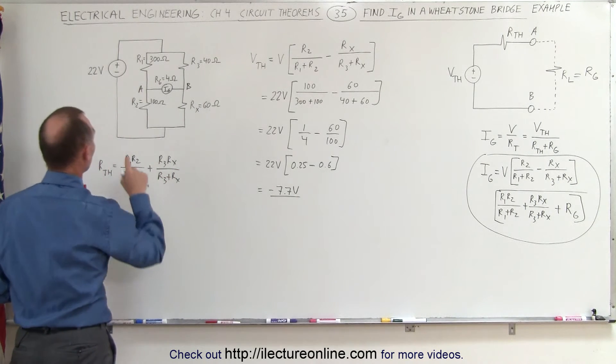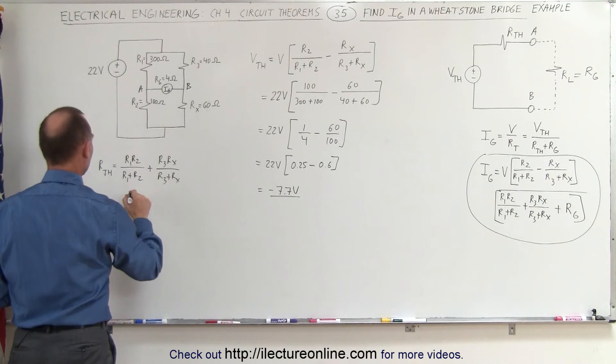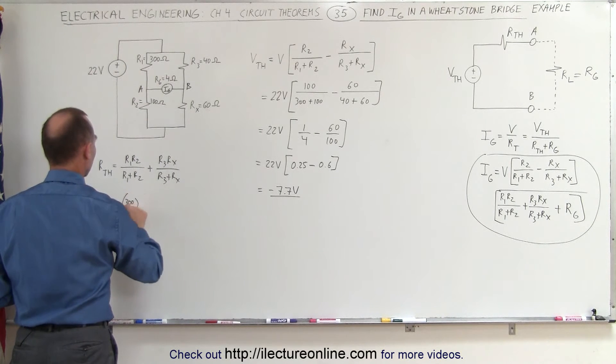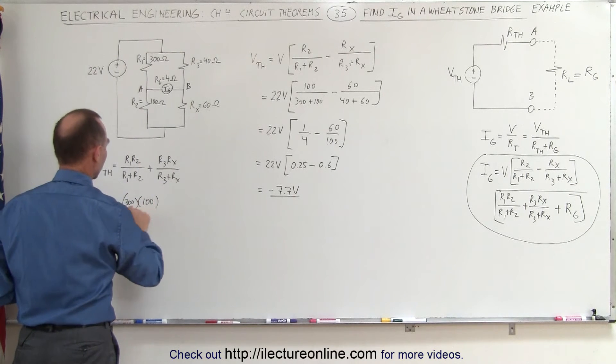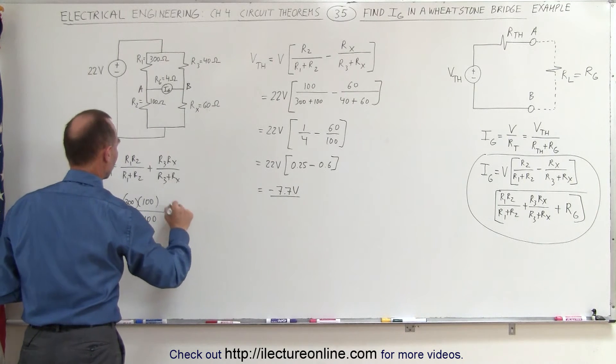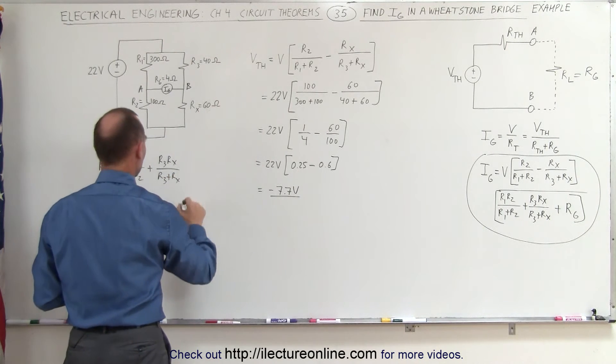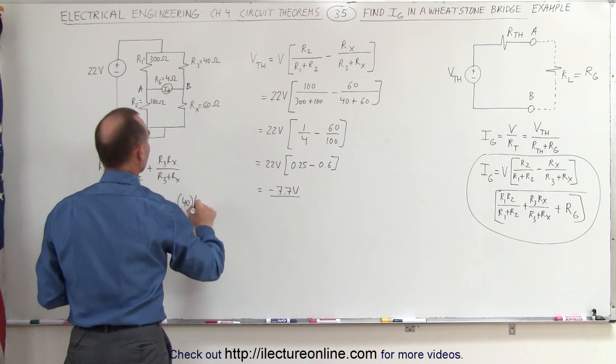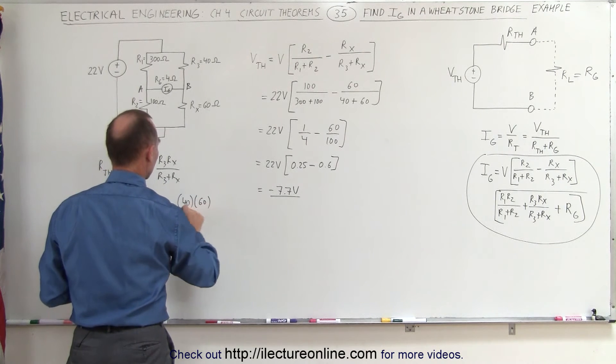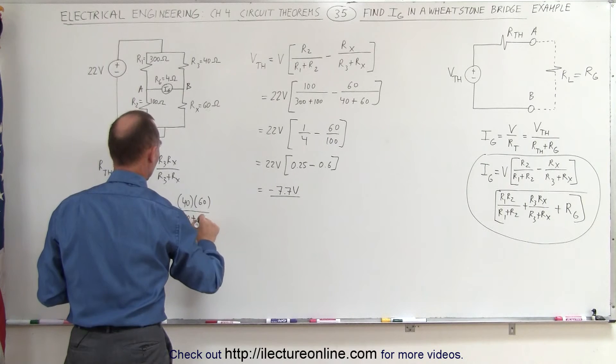Plug in the numbers here, R1 and R2 are 300 and 100, that's 300 times 100 divided by 300 plus 100, plus the second branch R3 would be 40 times 60 divided by 40 plus 60.